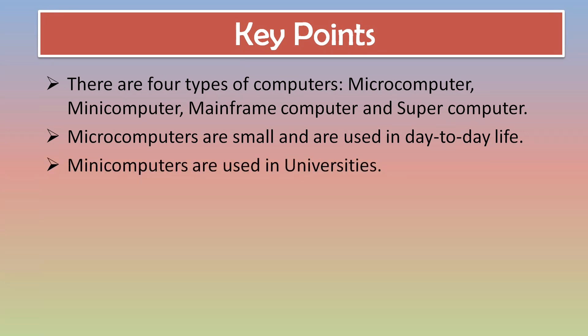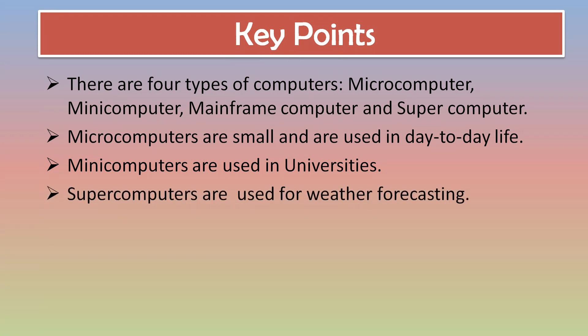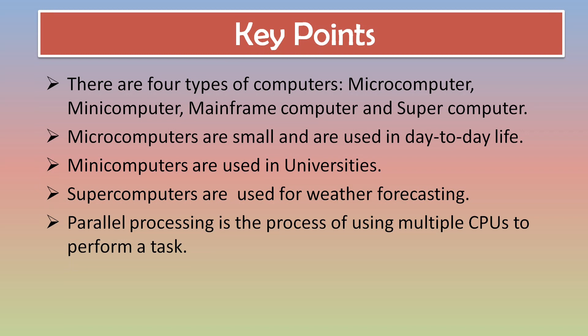Mini computers are used in universities. After that, supercomputers — which are the most powerful computers — where are they used? They are used in weather forecasting. Supercomputers also use the concept of parallel processing. What is parallel processing? Parallel processing is the process of using multiple CPUs to perform a task.